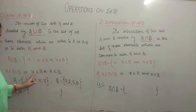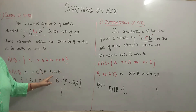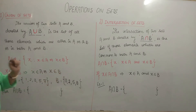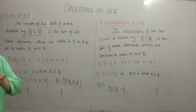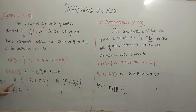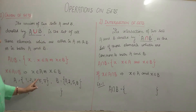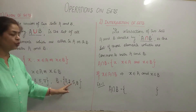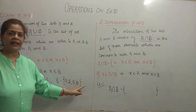Ya toh X A ko belong karta hai, ya X B ko belong karta hai. Let us understand this concept with the help of an example. We take set A having elements 1, 2, 3, 5 and 7, and set B having elements 0, 2, 5 and 8.